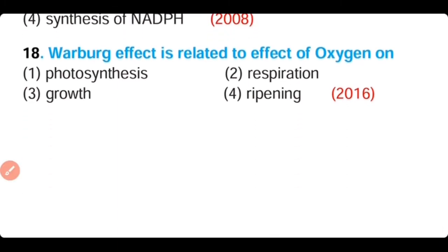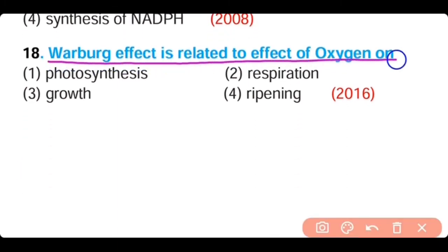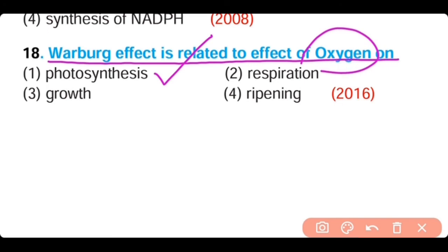Question number 18. The Warburg effect is related to the effect of oxygen on: photorespiration, respiration, growth, or ripening. The correct answer is option 1. The Warburg effect relates to the effect of oxygen on photorespiration. At high oxygen concentration, the rate of photorespiration decreases — this is known as the Warburg effect.